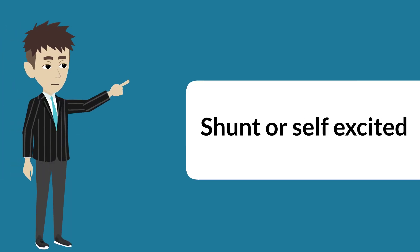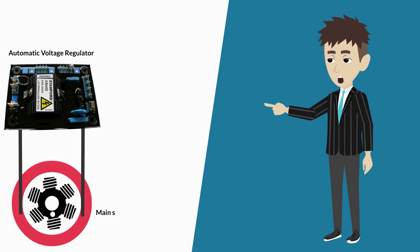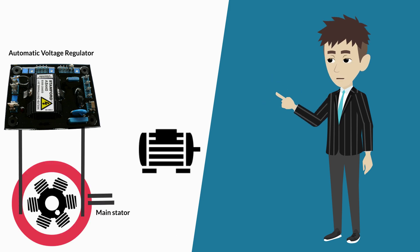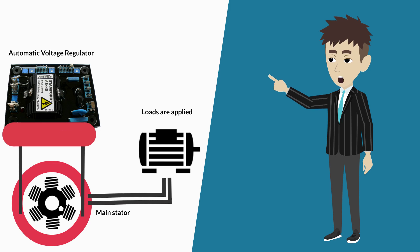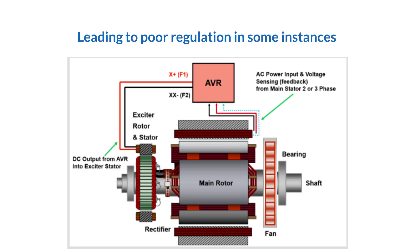In shunt or self-excited, the automatic voltage regulator is powered from the main stator terminals in the alternator, so when high loads are applied, the AVR power supply is also disrupted, leading to poor regulation in some instances.